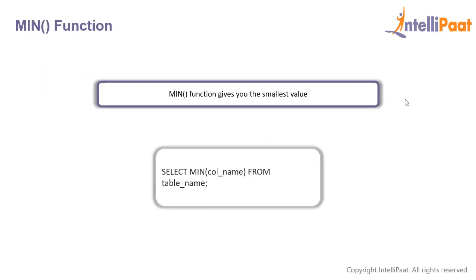Let's start with the min function. The min function gives the smallest value in a column. Let's look at the syntax. First we give the select keyword, then we give the min function, and inside the parenthesis we specify the name of the column from which we're supposed to find the minimum value.